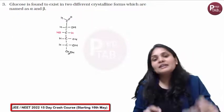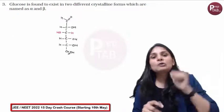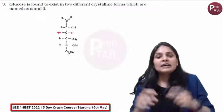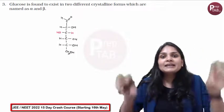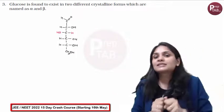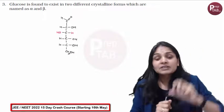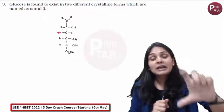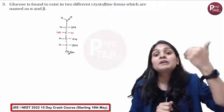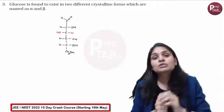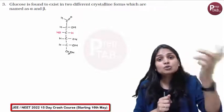Why is this? Because glucose is in a cyclic form in aqueous medium, where the aldehyde group gets consumed and becomes part of a hemiacetal.